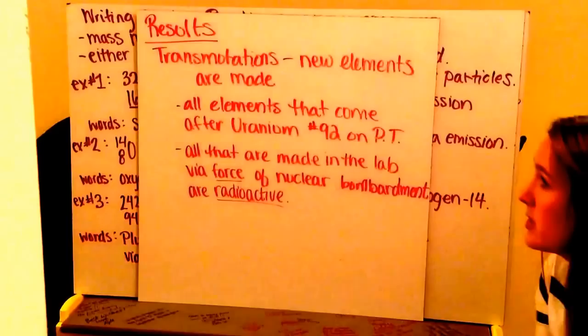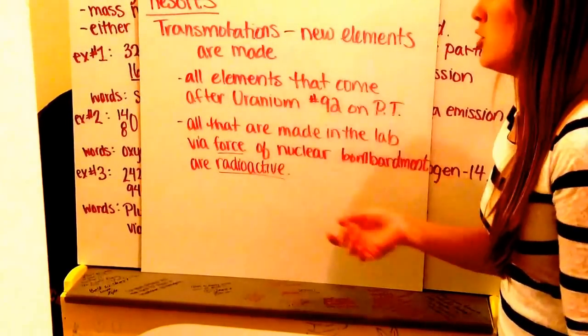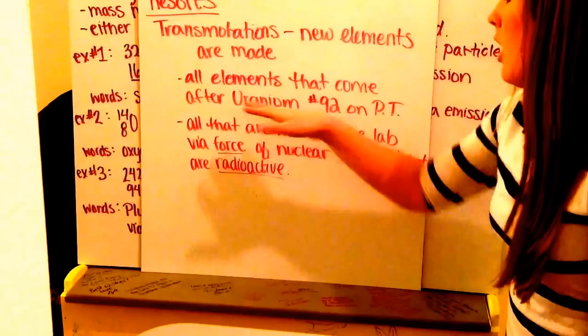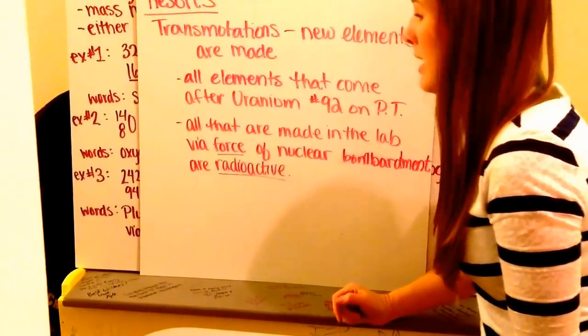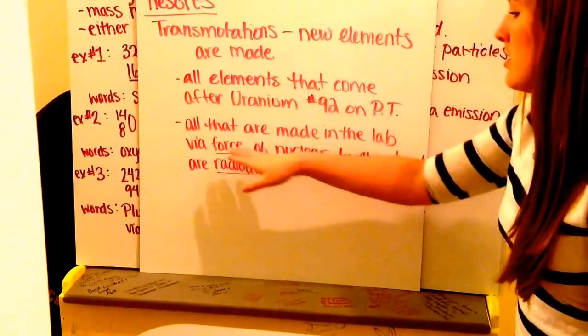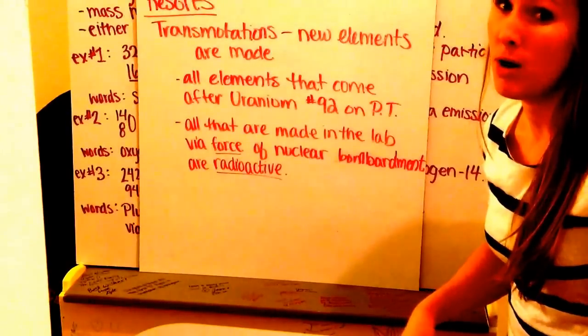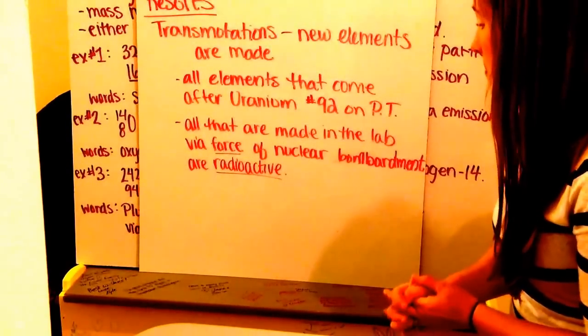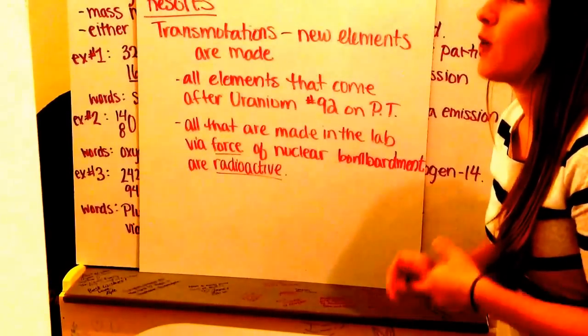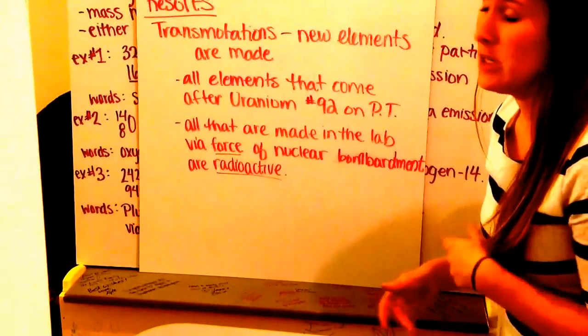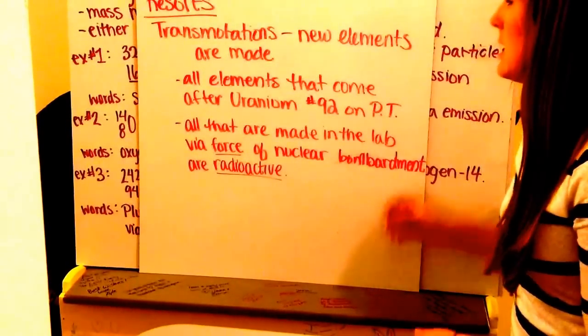Results of this radioactive decay are transmutations, which are going to be new elements made. All elements that come after uranium on the periodic table are your transmutative elements. And these are ones that are all made in the lab. They're made with force, so scientists are bombarding the nuclei to have something happen. And all of them after this, because they are forced into having a nucleus that they didn't want initially, they're going to be radioactive, meaning that they're going to want to nuclearly decay.